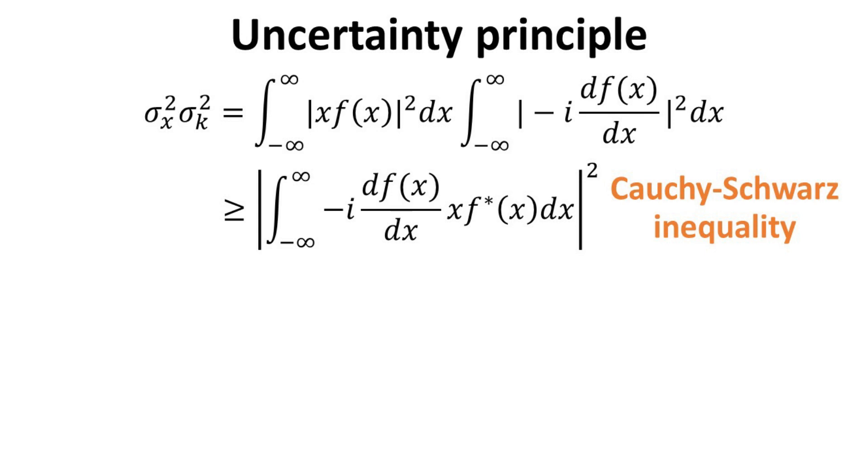To proceed, we shall recall the Cauchy-Schwartz inequality, which allows us to write the product of 2 integral of modulus square as an inequality as shown. In the language of quantum mechanics, this inequality is basically saying that the product of the inner products of two functions must always be larger than their cross-inner products.